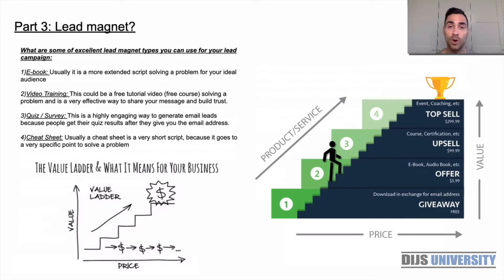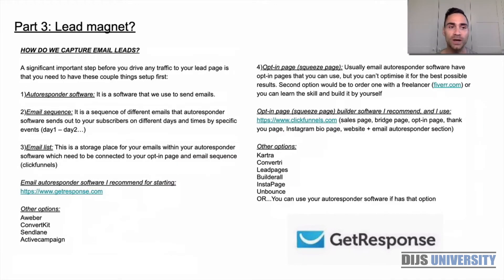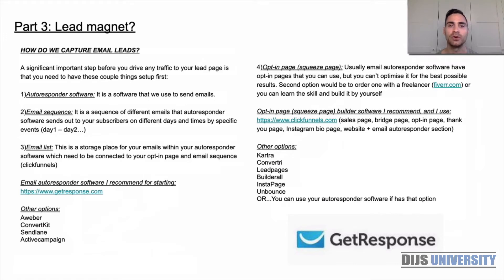Now let's look at how you can capture email leads and what kind of software you need before you run any traffic. First, you need an autoresponder software — that's the software we use to send emails, and we're going with GetResponse in this tutorial. Second is the email sequence — a series of emails that the autoresponder sends out to your subscribers on different days and times. You want at least 30 days of email sequence with valuable free content plus products or services.